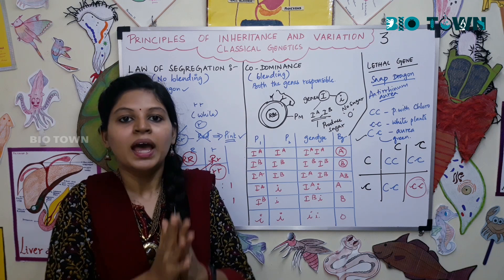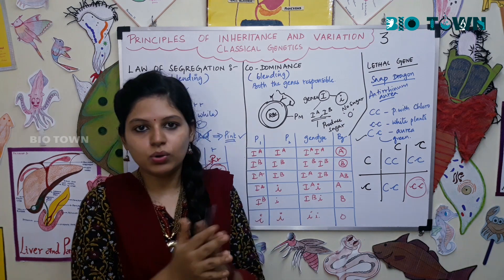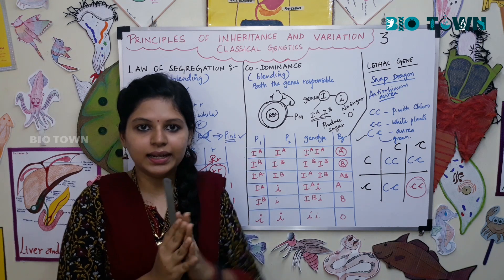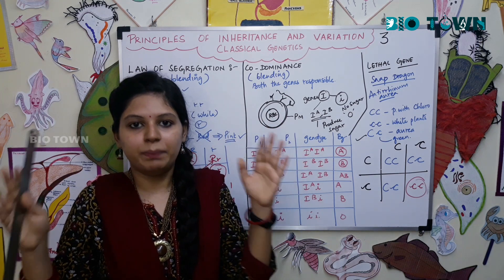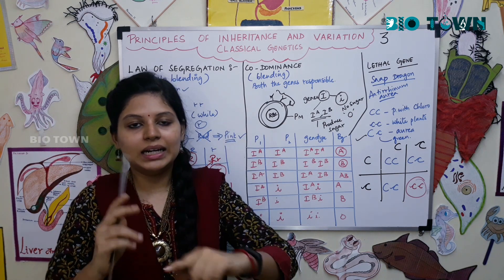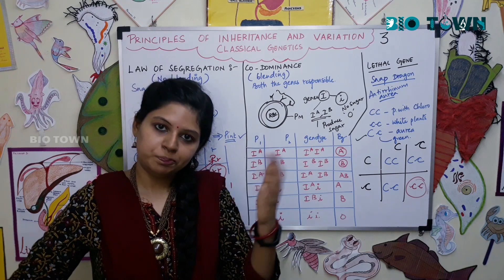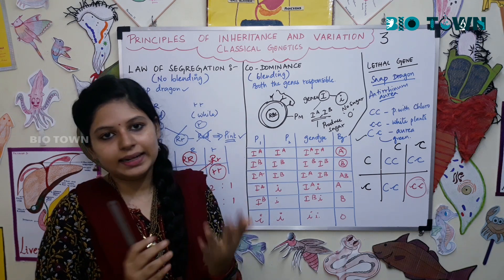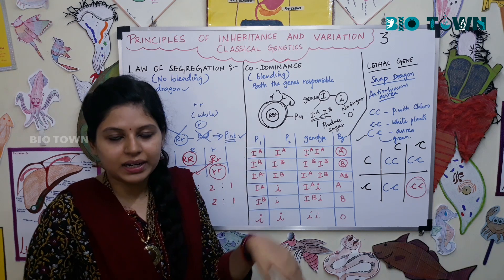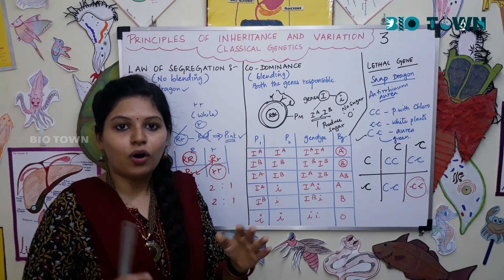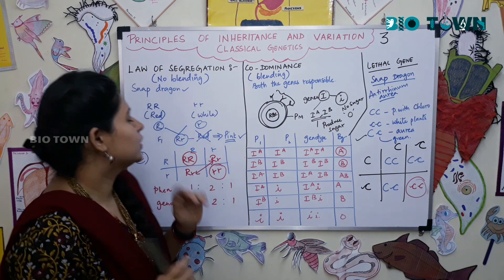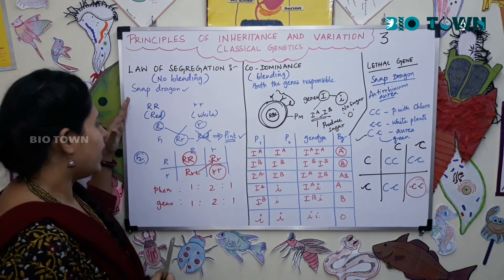In a monohybrid cross there was a blending of characters — a tall parent and a dwarf parent, the offspring would carry genes of both parents but exhibit the dominant trait. But in the law of segregation, there is no exhibiting of a superior or inferior trait; instead a new, different trait is exhibited. That is called the law of segregation.